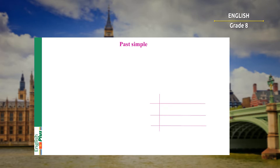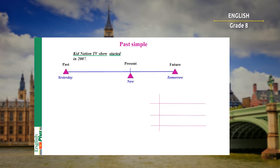Now let's look at past simple tense. Read the sentence please: Kid Nation TV show started in 2007. Is this sentence about the past, the present or the future? Right, this sentence is about the past, because now is 2020. To form past simple, we use subject – Kid Nation TV show – and verb 'started' in the second form or with ending -ed. Subject plus irregular verb in the second form, and if the verb is regular, we add ending -ed.